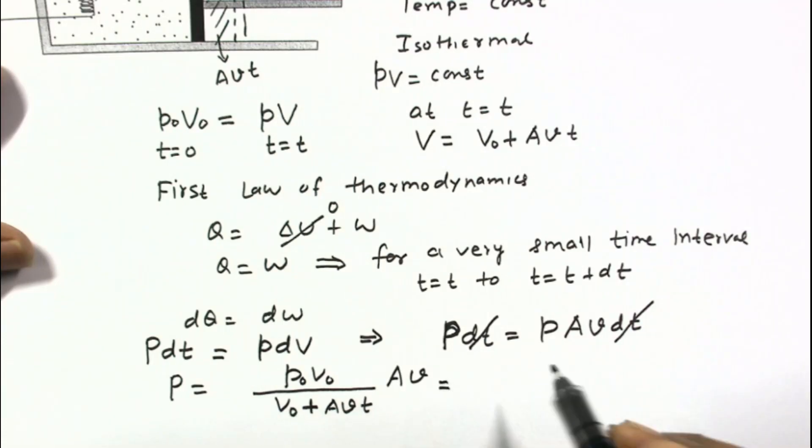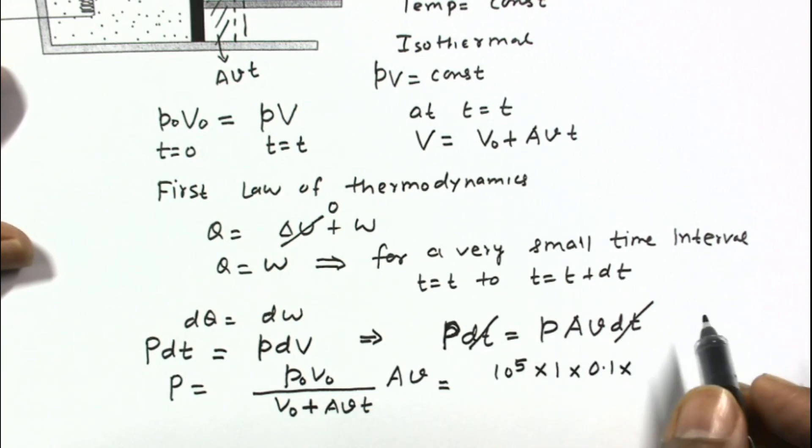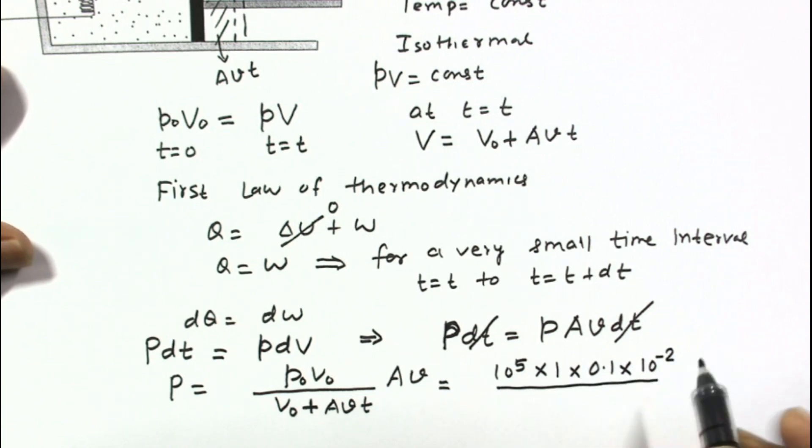We can put the values: 10^5, V0 is 1, area is 0.1 meter square and this velocity is 1 centimeter per second, that is 10^-2. V0 is 1, area 0.1 and velocity is 10^-2.